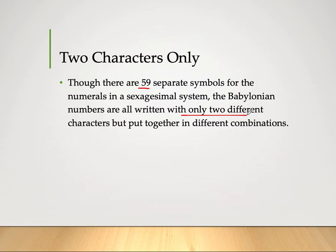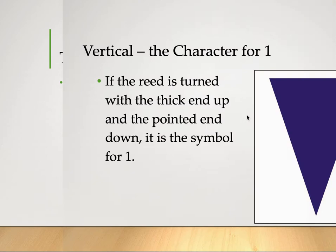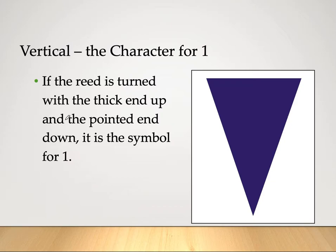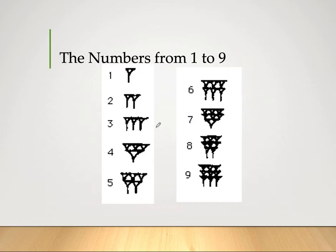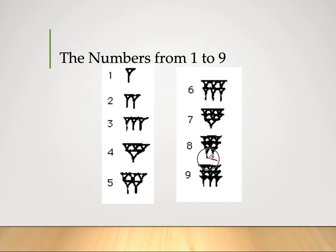The first character is a vertical wedge, made with the reed's thick end up and pointed end down, representing 1. The numbers 1 through 9 are formed using multiple vertical wedges. Notice that as numbers increase, the arrangement changes — for instance, at 4 a wedge is placed below the row of three, and by 6 they appear side by side with others, continuing through 7, 8, and 9.